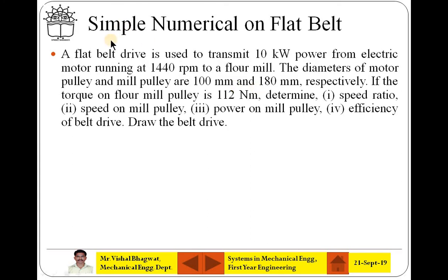The next problem is about the flat belt. A flat belt drive is used to transmit 10 kW power from an electric motor running at 1440 RPM to a flour mill — a practical application where the motor is used to crush grains. We need to find the speed ratio, speed of mill pulley, power of mill pulley, and efficiency of the belt drive. Diameters of motor pulley and mill pulley are 100 mm and 180 mm respectively. Torque of the floor mill pulley is 112 Nm.